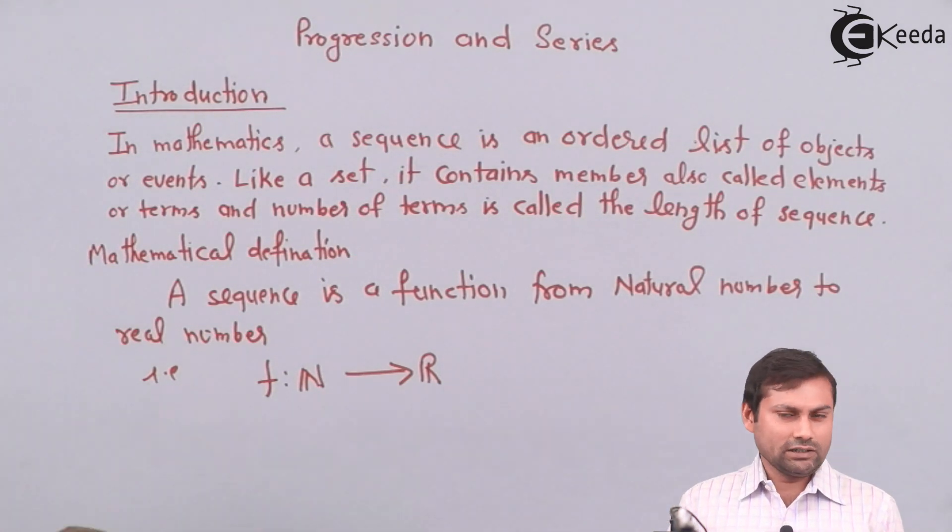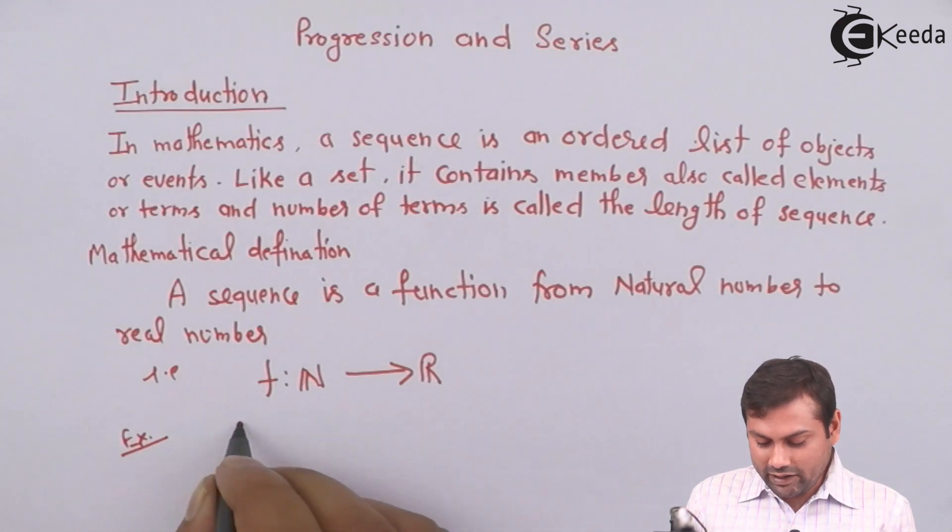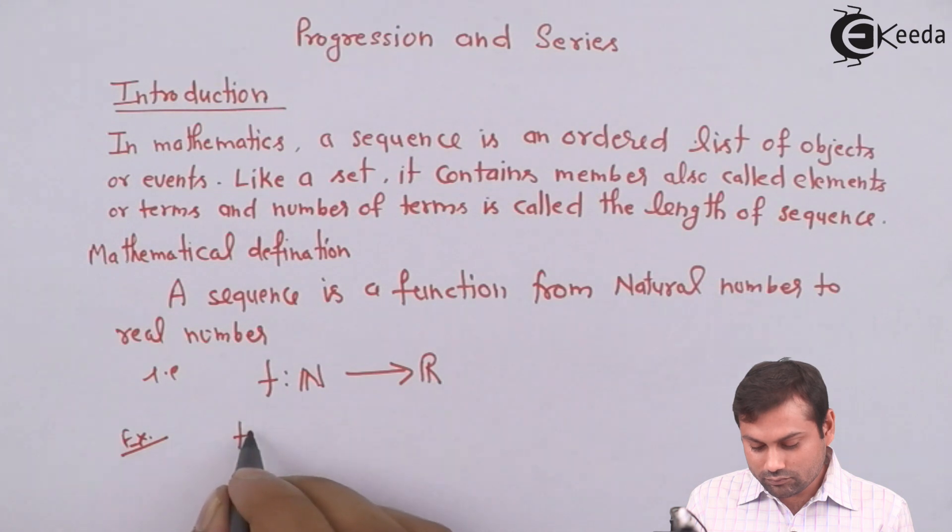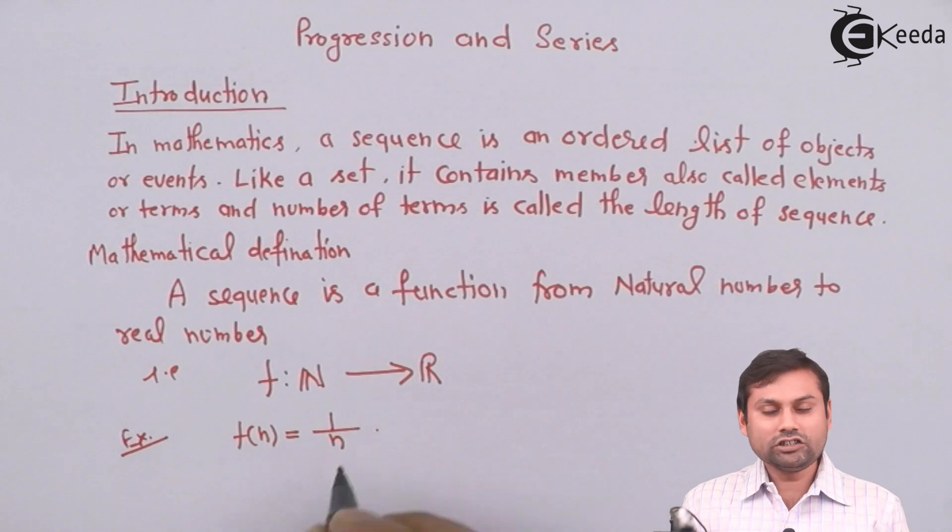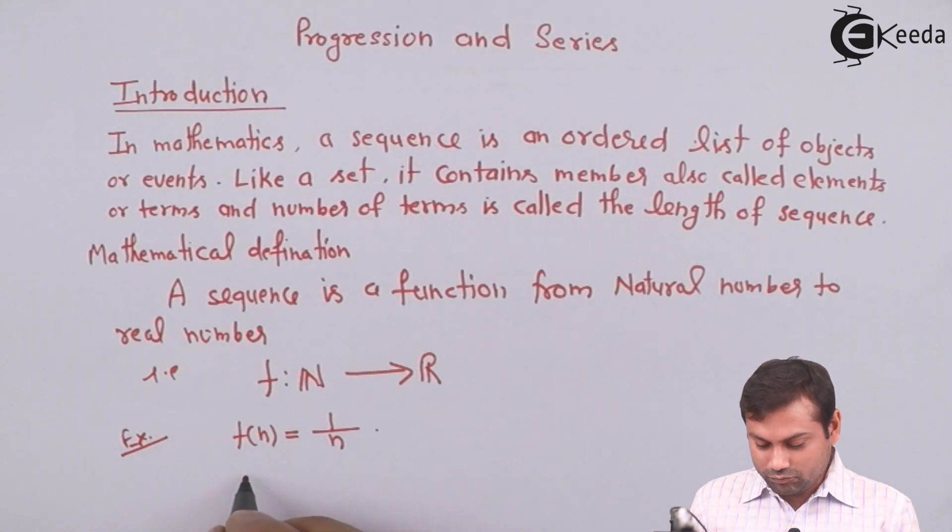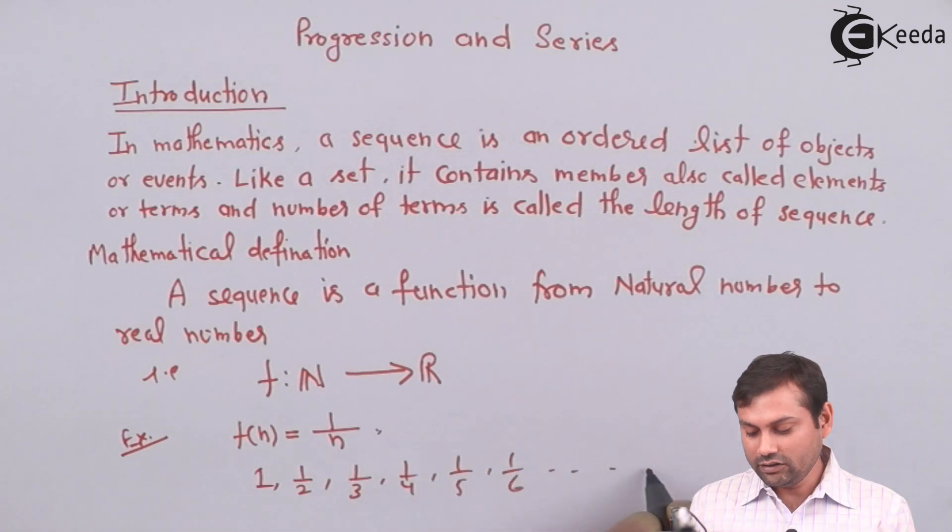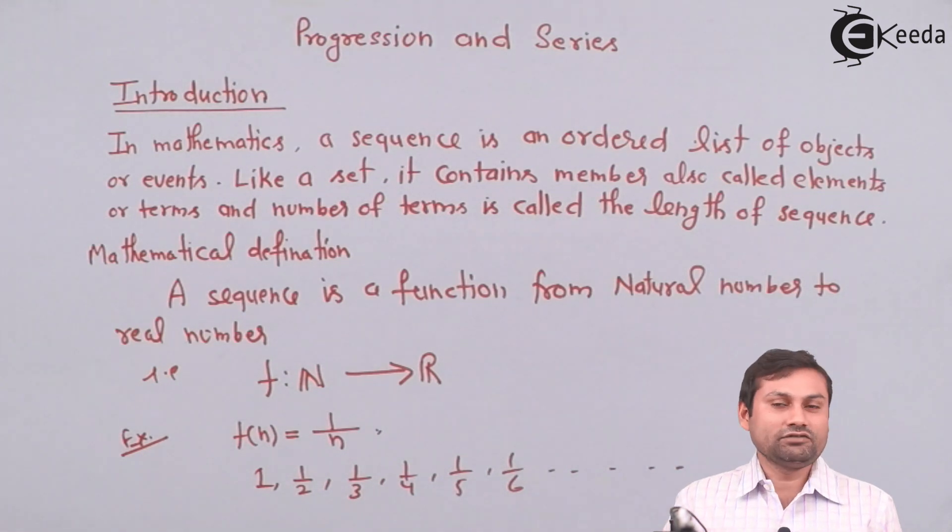This is the definition of a sequence. Let's take some examples. If I define fn equals to 1 upon n, this is also a sequence. So what are the terms? n is our domain. If we have all the terms for this, first term is 1, second term is 1 upon 2, third term is 1 upon 3, fourth term is 1 upon 4, 1 upon 5, 1 upon 6, and so on. This is one kind of sequence.